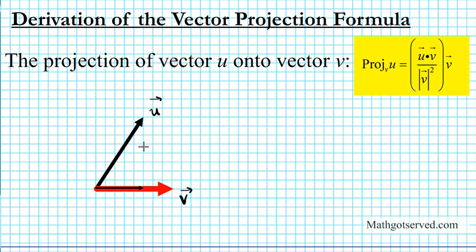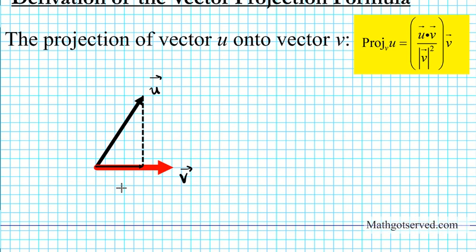In order to make sure this is correct, I'm just going to draw a dotted line from this tip straight down to construct my projection. So this vector that we have just created down here is the projection of u onto v. Let's name this vector vector p. So vector p is the projection of vector u onto vector v.